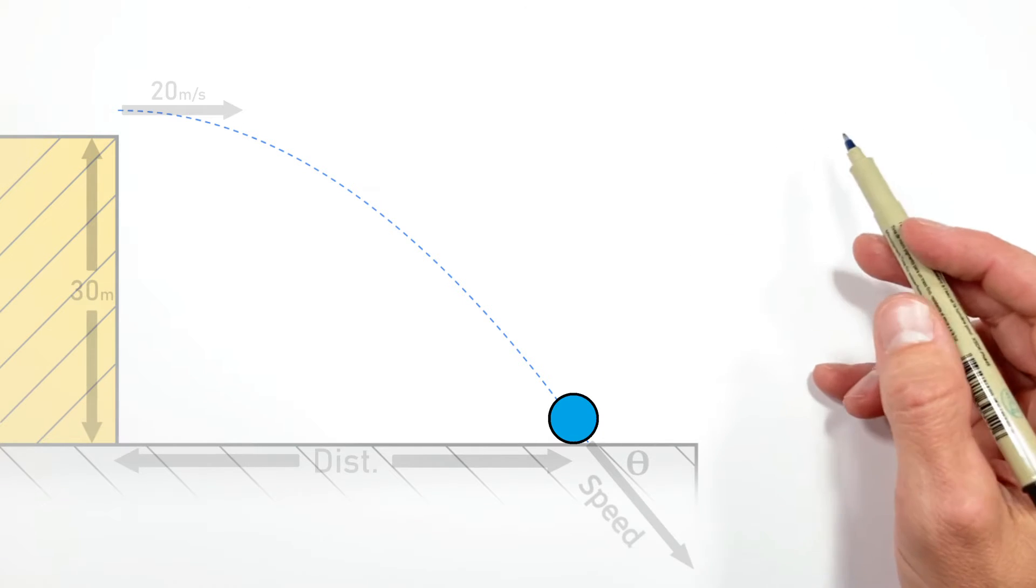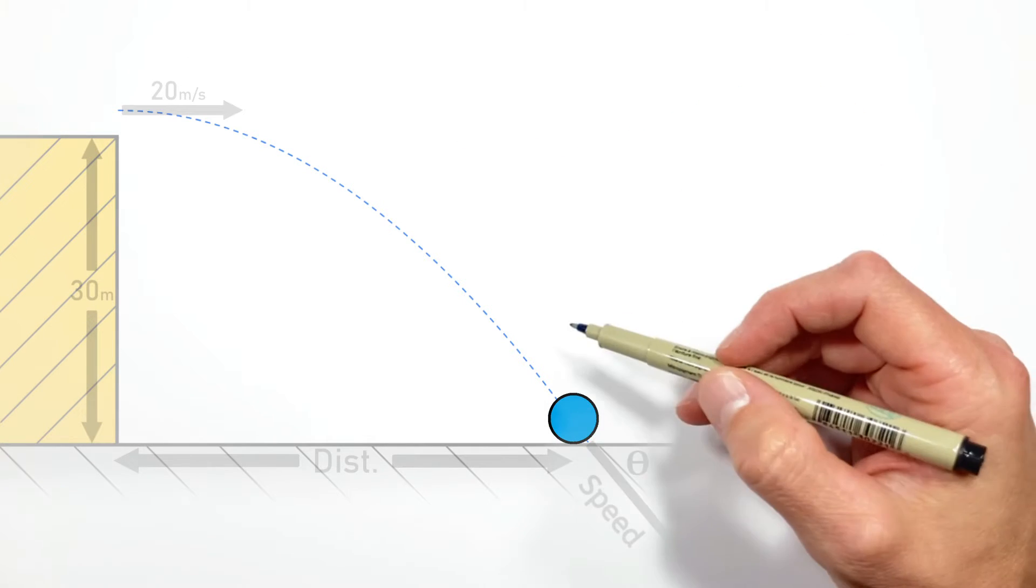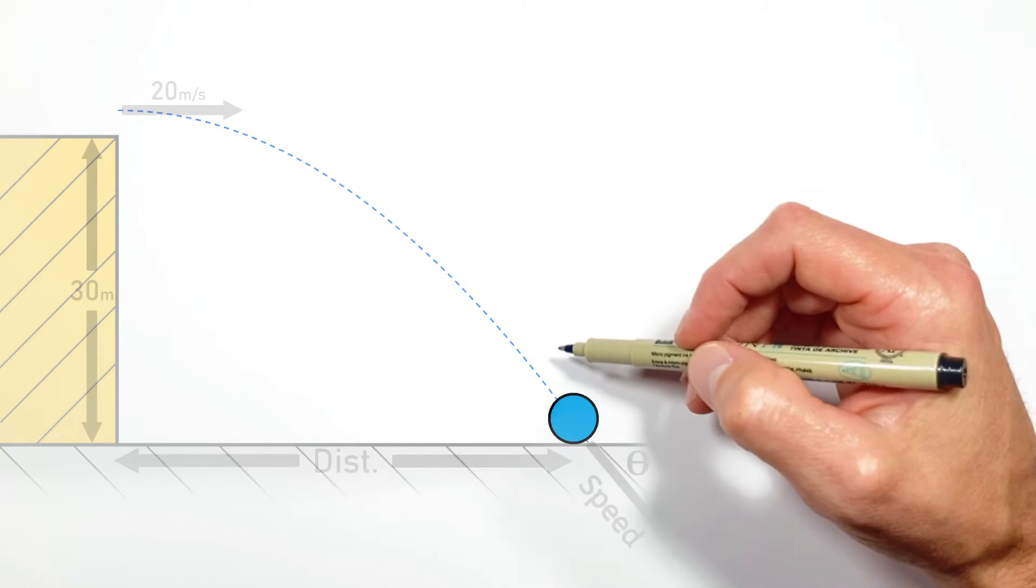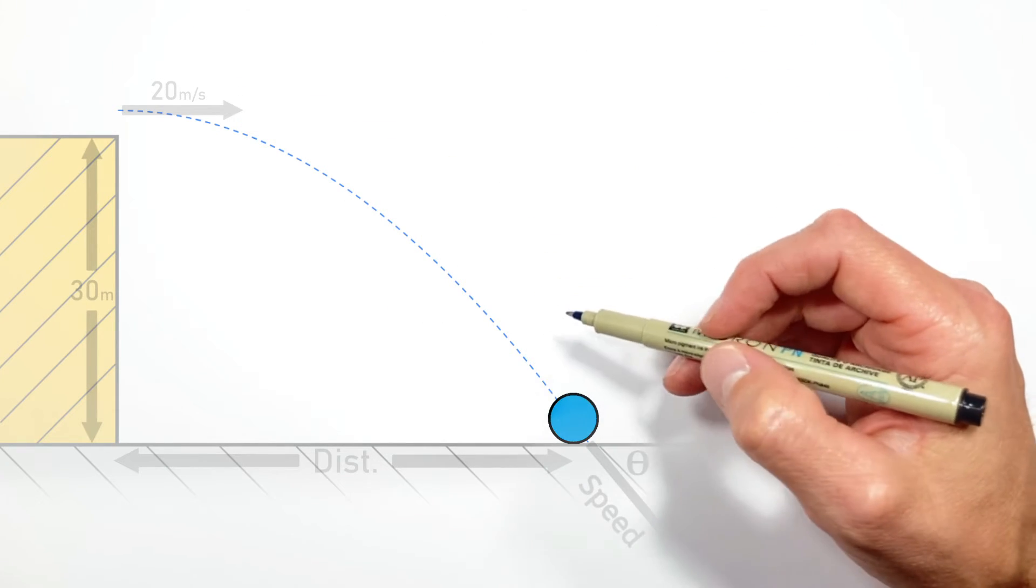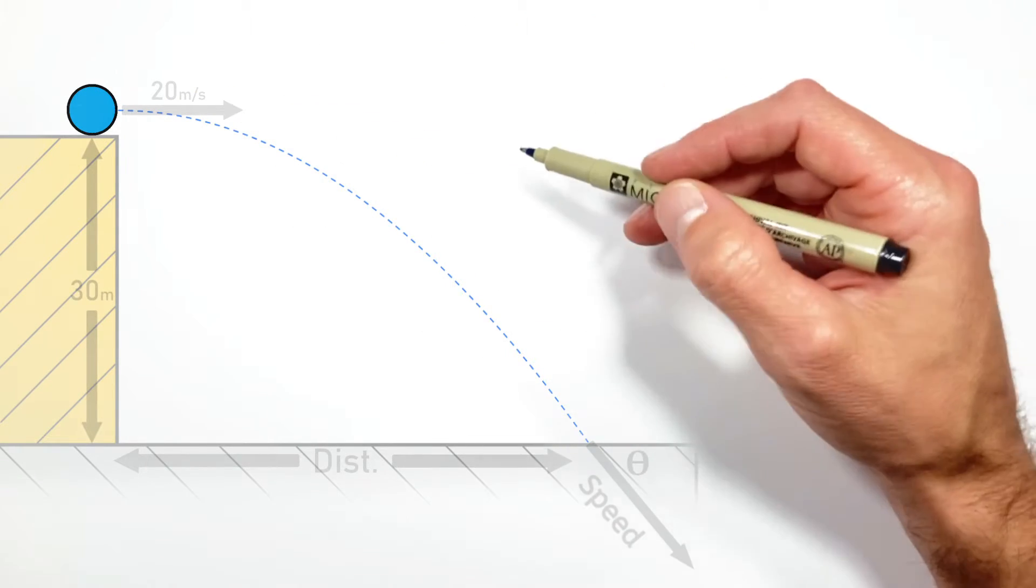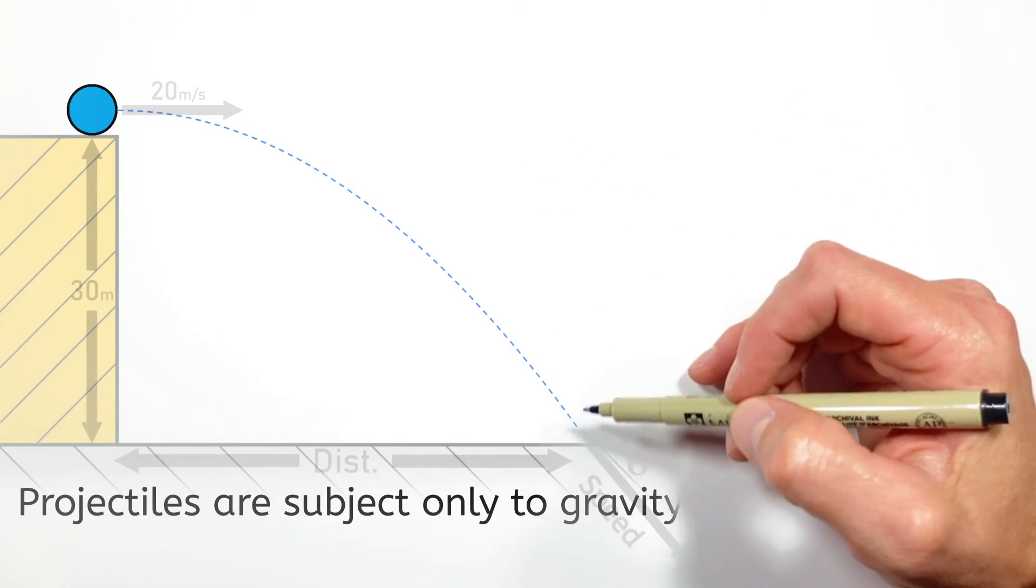Before we get started with our math, there are a couple of important concepts we need to discuss. The first is that projectile motion is characterized by the idea that when something is in projectile motion, like this ball, it is subject only to the force of gravity.